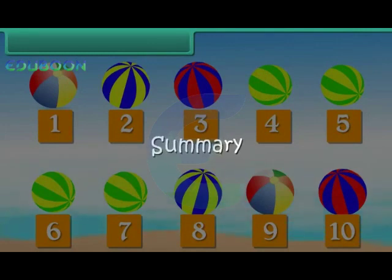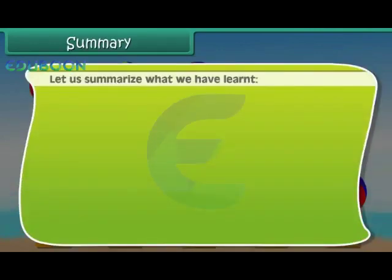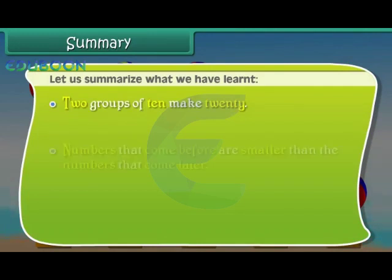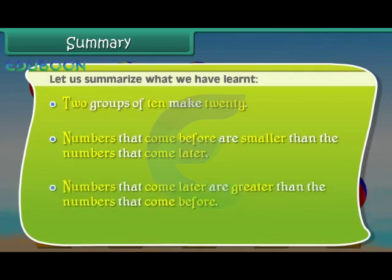Summary. Let us summarize what we have learned: two groups of ten make twenty; numbers that come before are smaller than the numbers that come later; numbers that come later are greater than the numbers that come before.